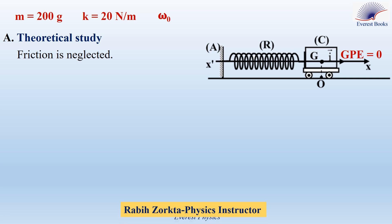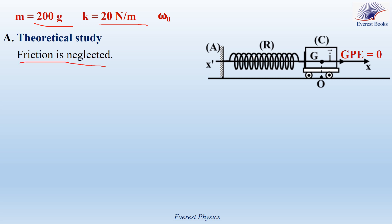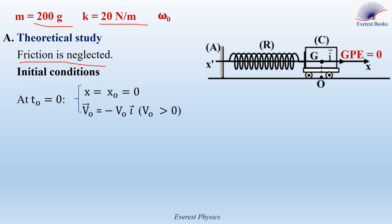Consider a small trolley C of mass 200 grams, attached to one extremity of a horizontal spring R of negligible mass and of force constant 20 newtons per meter. The other extremity of the spring is attached to a fixed support A. Trolley C may slide without friction on a horizontal rail, and its center of mass G can move along the horizontal x axis. At time zero, G is initially in its equilibrium position O, so x equals x of zero equals zero, and is given an initial velocity V zero equal to minus V zero i, where V zero is positive. Then C oscillates without friction with its natural angular frequency omega zero. Take the horizontal plane passing through G as a reference level for gravitational potential energy.